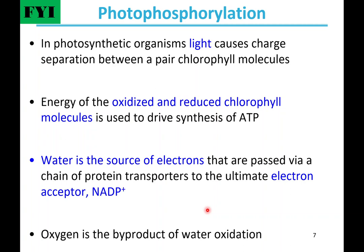As an aside, plants can use light to accomplish a similar process, called photophosphorylation. Light causes a charge separation between chlorophyll molecules, and the energy difference between the oxidized and reduced chlorophyll molecules is what's used to drive ATP synthesis. It's a little different because water is the source of the electrons that are passed to the ultimate electron acceptor, which is oxidized NADP+. Oxygen is the byproduct of that water oxidation — water gives up electrons, and oxygen is produced. So in us, oxygen is being converted to water, and in photosynthetic organisms, water is being converted to oxygen.